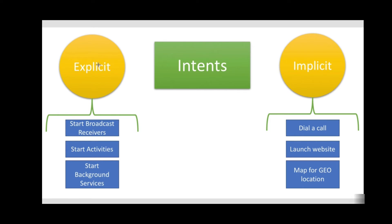Explicit intents, on the left hand side, designate the target component by its name. Since component names would generally not be known to developers of other applications, explicit intents are typically used for application internal messages, such as an activity starting a subordinate service or launching a sister activity. You could start a broadcast receiver, start activities, or start background services — and all of these are part of your own application, not external applications that are receiving the intent.